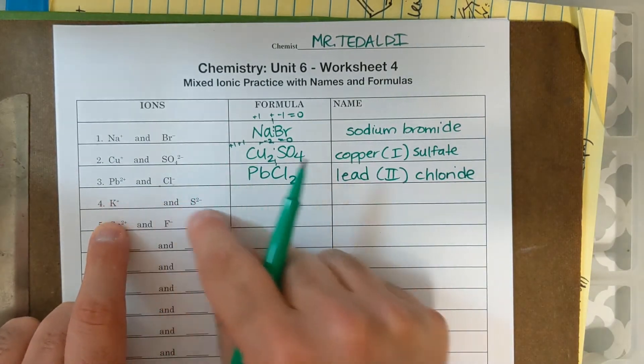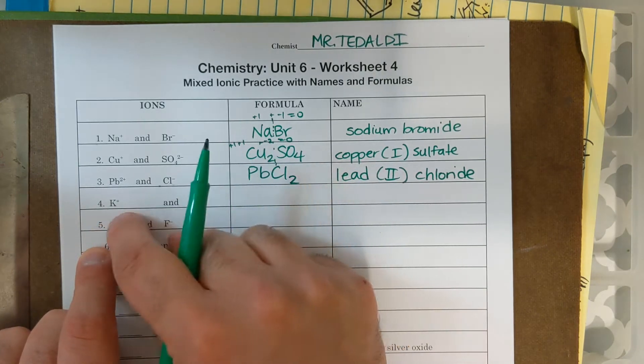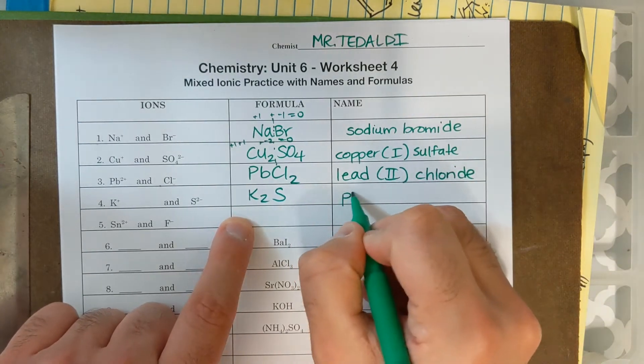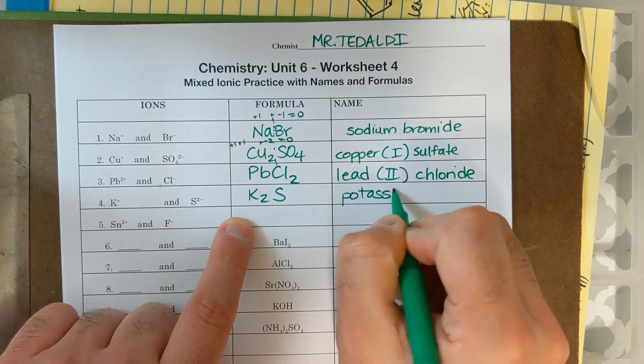Next one, K plus and S two minus. If I do the crisscross method, I'll need two Ks, one S. K is not a transition metal, this just becomes potassium sulfide.